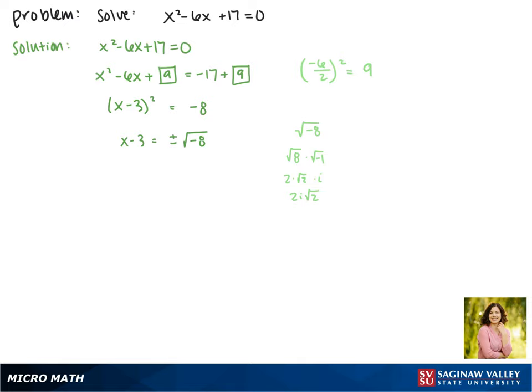We'll plug that back into our equation. This gives us x minus 3 equals plus or minus 2i times the square root of 2. Solving for x gives us x equals 3 plus or minus 2i times the square root of 2.